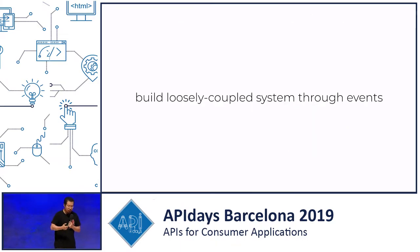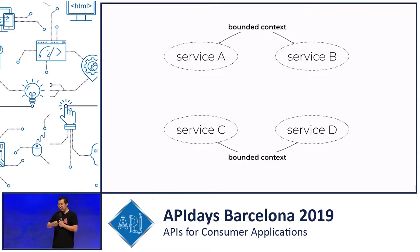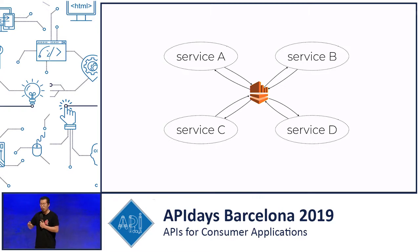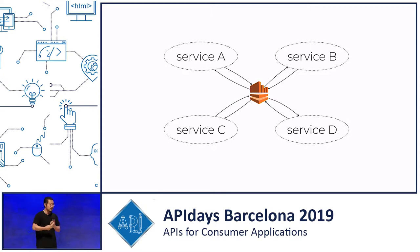This is a great way for building loosely coupled systems through events, whereby you have a bounded context around every single microservice, and instead of having them talk to each other directly and cross that boundary, they will all be publishing events independently to a stream and reacting to those events independently as well. As we saw in the previous talk, this allows you to build more robust, more resilient, and more scalable systems.